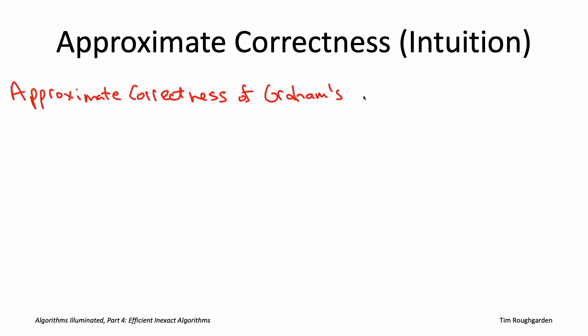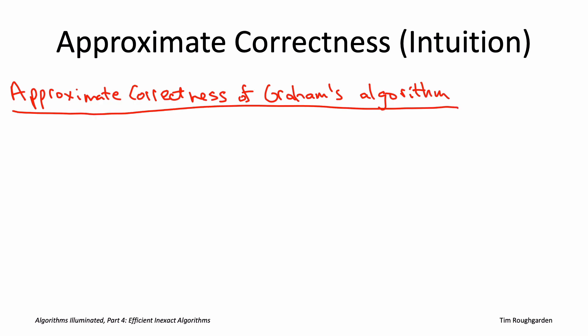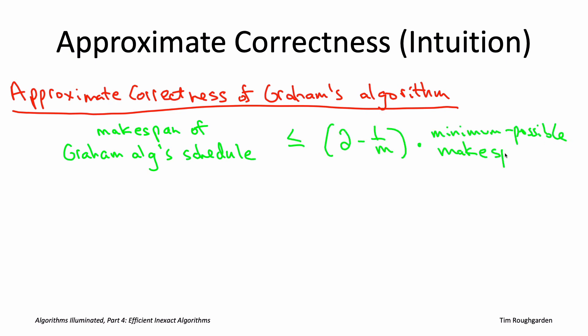What we're going to prove next is an approximate correctness guarantee for Graham's algorithm. That example in the quiz and corresponding generalizations to more machines are actually the worst possible examples. Precisely, Graham's algorithm is approximately correct in the sense that no matter the input — no matter how many machines, how many jobs, or what the job lengths are — the makespan of the schedule produced will never be more than a factor of (2 − 1/m) above the minimum possible, where m is the number of machines. For m=2 this means at most 1.5×; for m=5, at most 1.8×, which is exactly what we saw in the quiz.